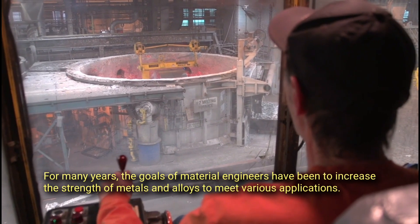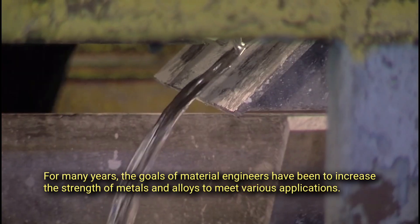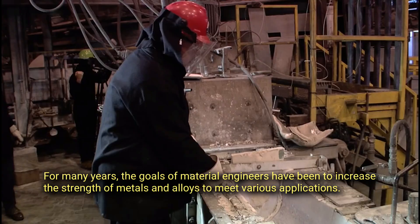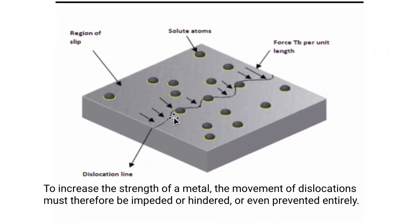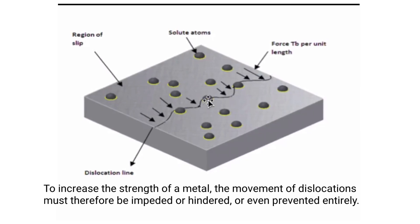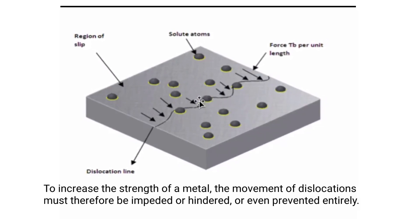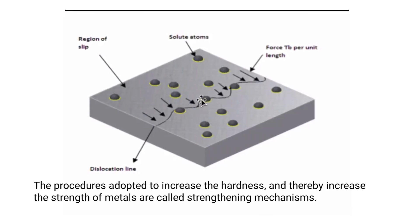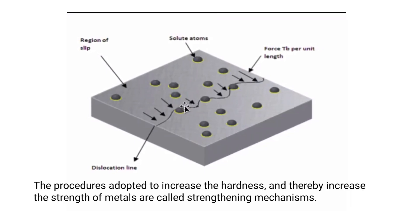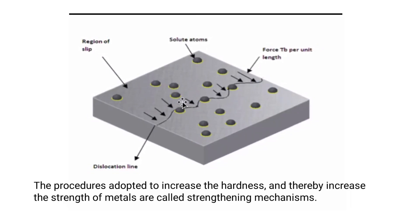For many years, the goals of material engineers have been to increase the strength of metals and alloys to meet various applications. To increase the strength of a metal, the movement of dislocations must therefore be impeded or hindered, or even prevented entirely. The procedures adopted to increase the hardness and thereby increase the strength of metals are called strengthening mechanisms.